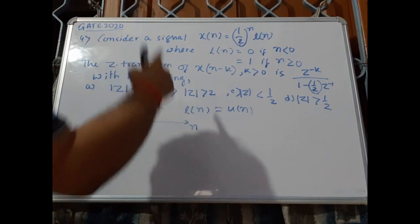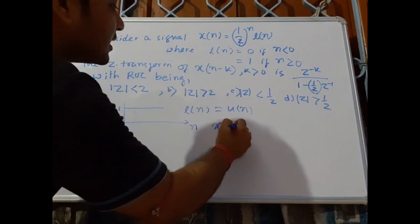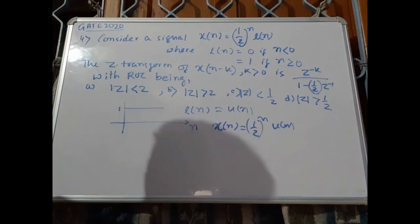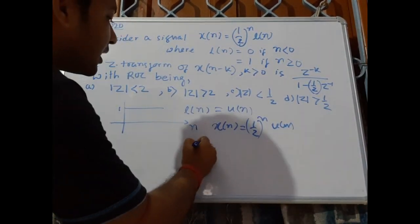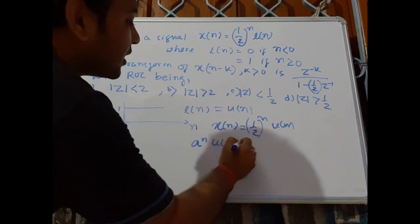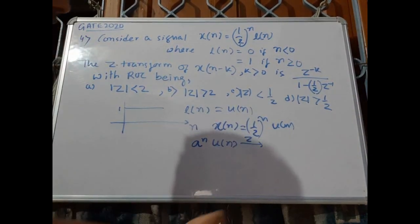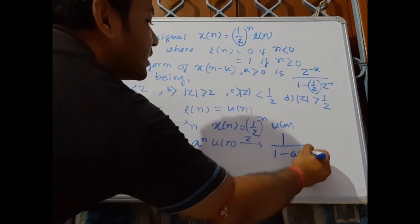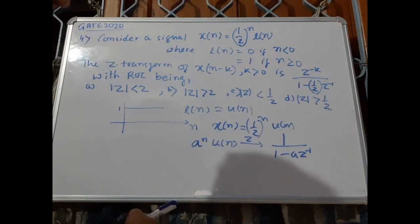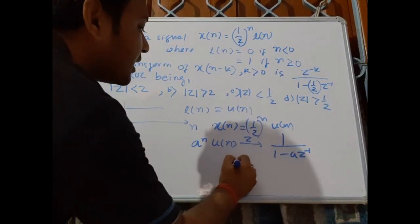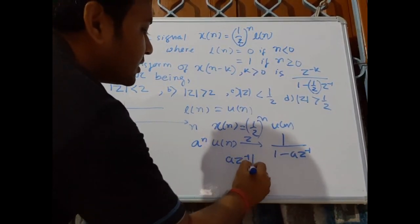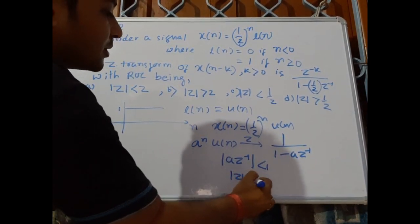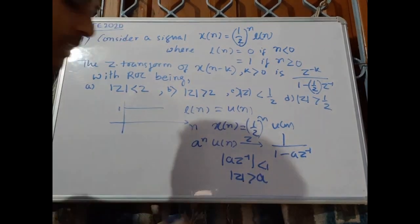If the signal x(n) equals half to the power n times u(n), then for a to the power n, if I apply Z-transform, we have the solution 1 over 1 minus a times z inverse. The ROC will be: |az^-1| should be less than 1, and |z| should be greater than a.